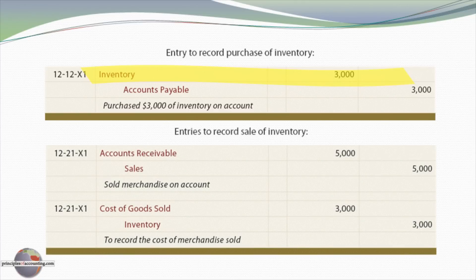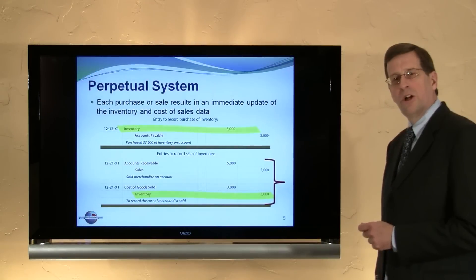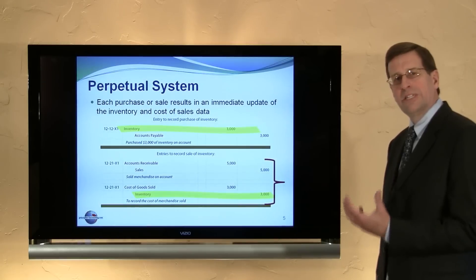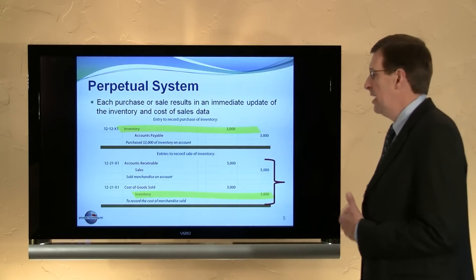As the sale occurs, we're going to record a reduction of inventory. Recording a $5,000 sale for goods that cost $3,000, we debit cost of goods sold and reduce inventory at the very moment of the sale — these entries occur concurrently. This is the perpetual nature of keeping the accounts up to date.